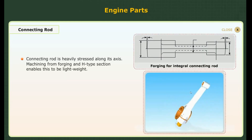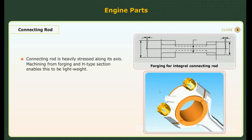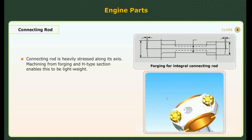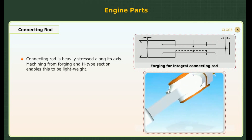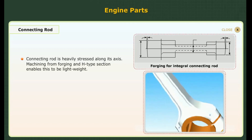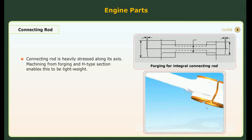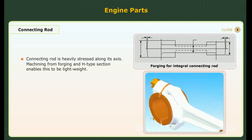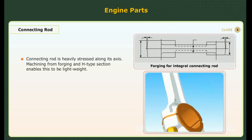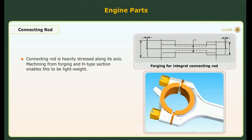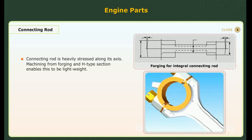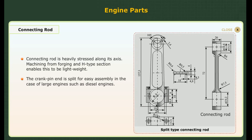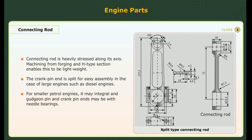Connecting rod. The connecting rod is heavily stressed along its axis. Machining from forging and each type of section enables it to be lightweight. The crank pin end is split for easy assembling. In the case of large engines such as diesel engines, for smaller petrol engines it may be integral with gudgeon pin and crank pin ends, which may be with needle bearings.